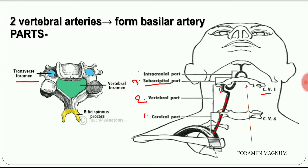The third part is the sub-occipital part, where the artery is present in the region of the sub-occipital triangle. Here it exits through the transverse foramen of the atlas and then pierces the dura to enter the cranial cavity.